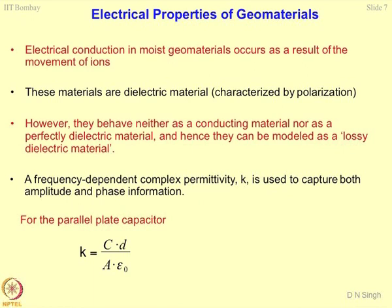For the parallel plate capacitor model, the charge carrying capacity is k × A × ε₀ / d. From here you can easily get the value of k. This complex permittivity k is a function of the geometrical properties of the capacitor: d is the distance between the plates, A is the cross-sectional area of the plates, C is the total charge accumulated in the system, and ε₀ is the permittivity of free space. This is how you can compute the k value directly.